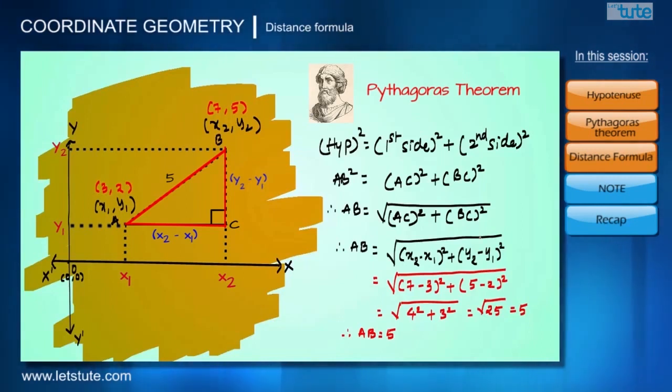And if we know the absolute distances of AC and BC, AC is nothing but x₂ minus x₁, which will be 7 minus 3, which is 4. And BC is nothing but y₂ minus y₁, which is 5 minus 2, that is 3. On using Pythagoras theorem on the absolute distances 4 and 3, we get hypotenuse as 5, the same distance.